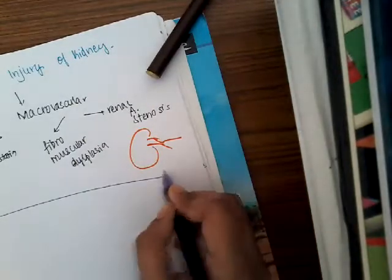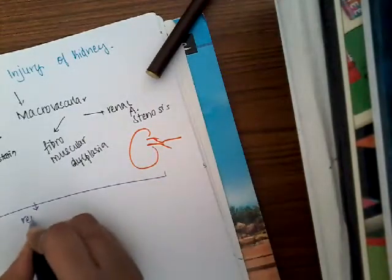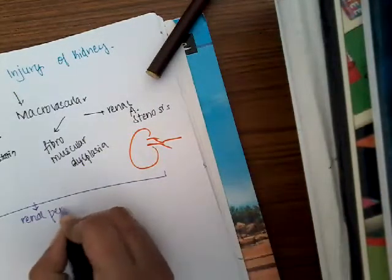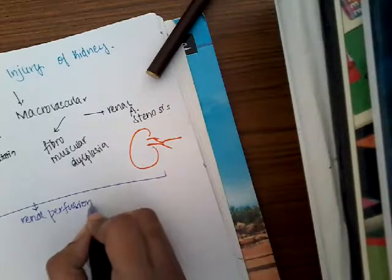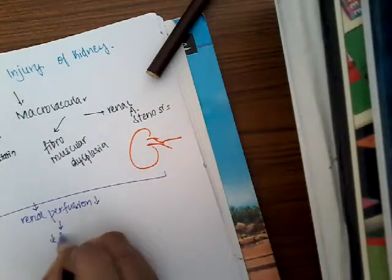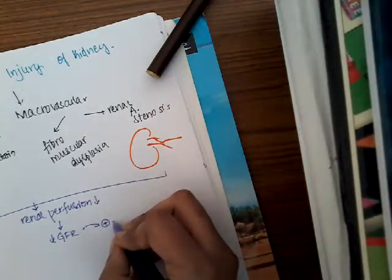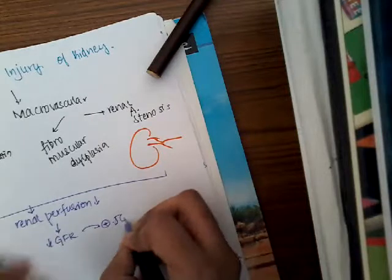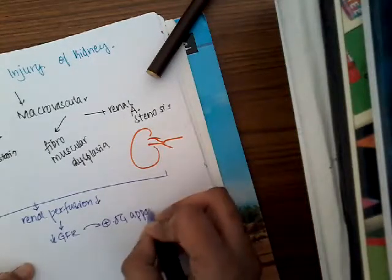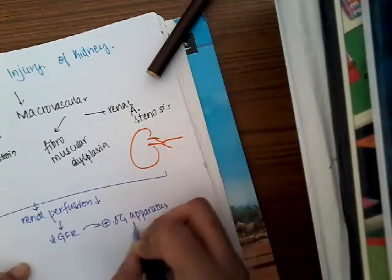In all these cases, whenever the renal perfusion is decreased, this can lead to decreased GFR. However, this decreased GFR will activate the juxtaglomerular apparatus to produce renin.